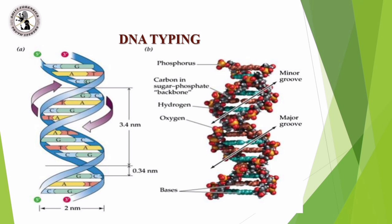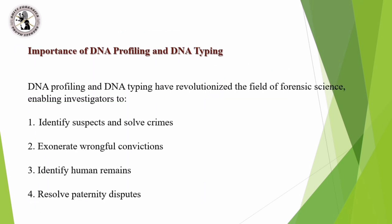Next, let's move on to the important topic of the importance of DNA profiling and DNA typing. Let's understand what is the importance of DNA typing in the field of forensic science and how it has helped investigators deal with criminal activities. First, it helps to identify suspects and solve criminal activities; second, exonerate wrongful convictions; third, identify human remains; and fourth, resolve paternity disputes.